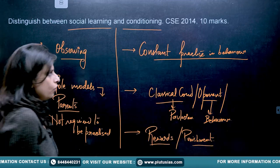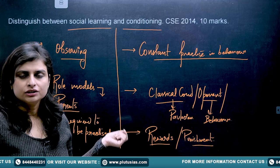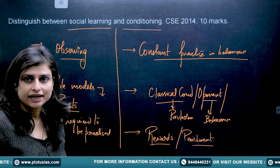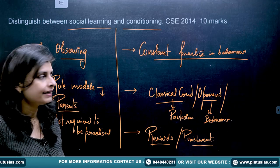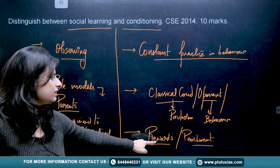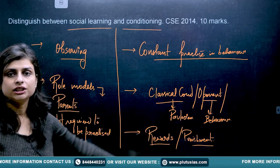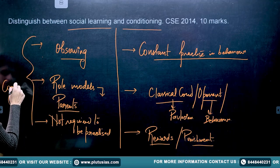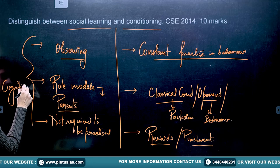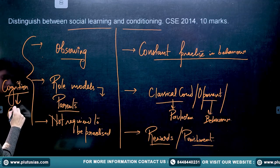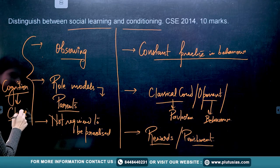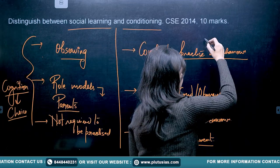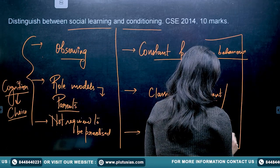Both involve the cognition aspect. In learning, it is about what the person or child is observing. In conditioning, rewards and punishment bring changes in the cognition part. Cognition is also involved here because it is a choice — which kind of behavior you are learning.